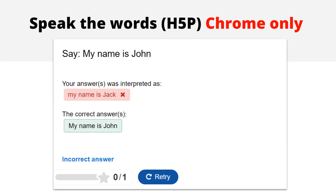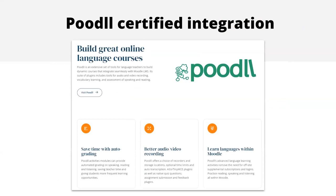For speaking, self-assessment, and auto-grading, we really need to be exploring Poodll. Poodll is a certified integration — Moodle HQ has decided it is of good enough quality and embeds beautifully into Moodle, so we promote it. It's a subscription you pay for, but these are dedicated tools for language teachers and it is excellent. We don't have time to look at all of the tools here, but I have put detailed information and another video about Poodll in the course, which will open shortly after this webinar.